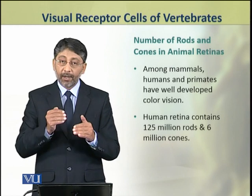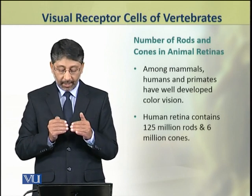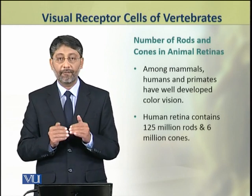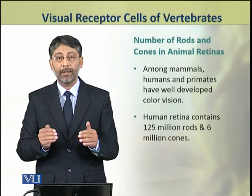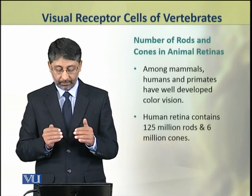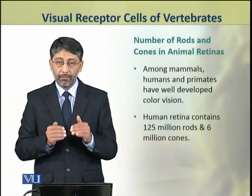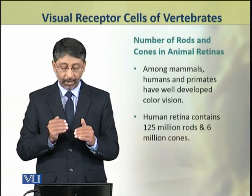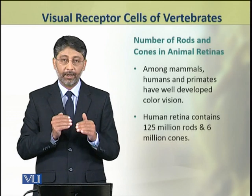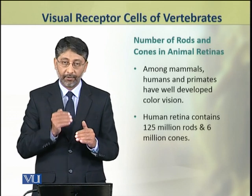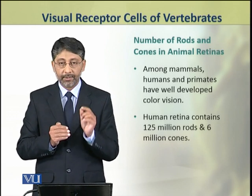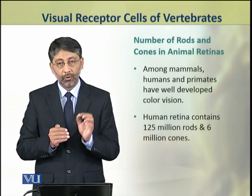Among mammals, humans and primates have well-developed color vision. The human retina contains about 125 million rods and 6 million cones.